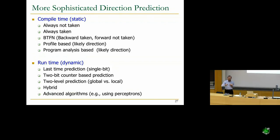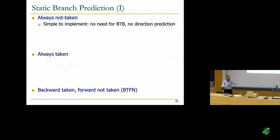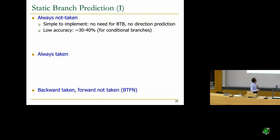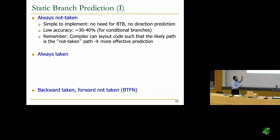Always-not-taken is very simple to implement — no need for a BTB since you're always predicting not-taken. But in real programs it has very low accuracy: 30 to 40 percent for conditional branches. Always-taken is usually better because most branches are in loops, and loops are usually iterating — they're taken. So backward branches are usually taken.